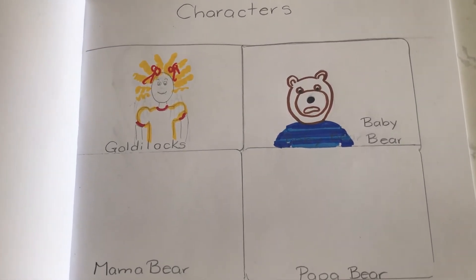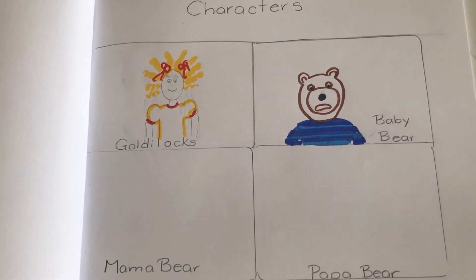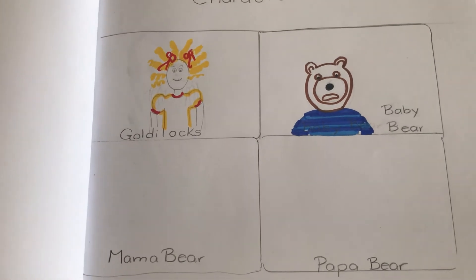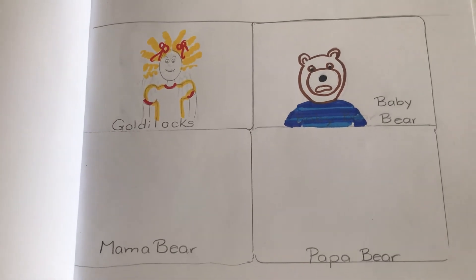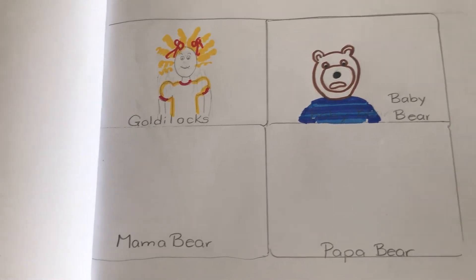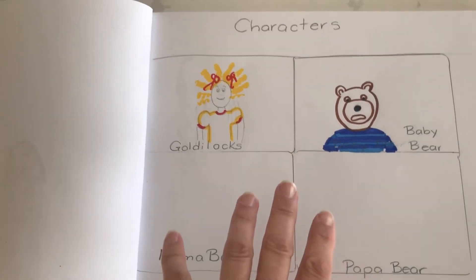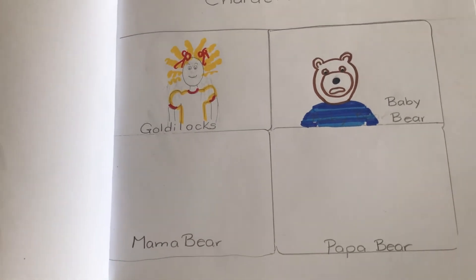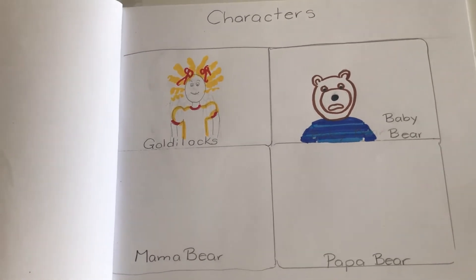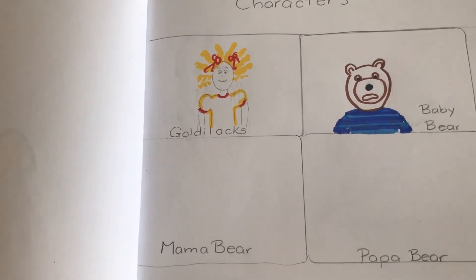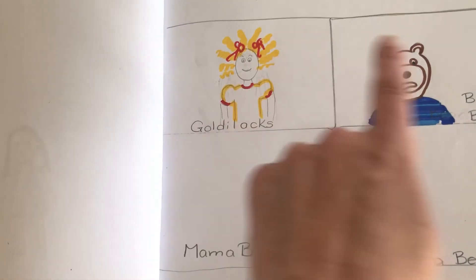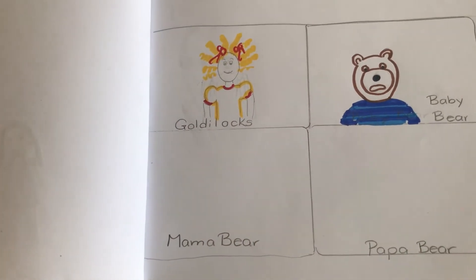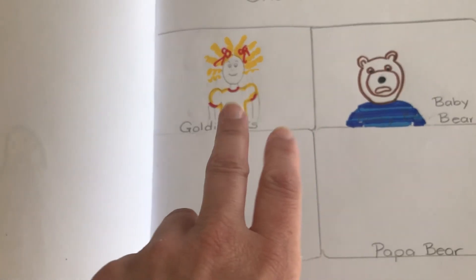I'd like you to write the four characters — that means who is in the story. So you can see, I just did mine in the journal. I know there's a sheet you can print off if you'd like, but if you just want to draw it, that's fine too. I drew four blocks for those that were in the story, and I started the pictures.